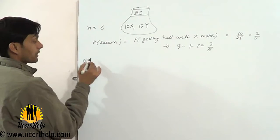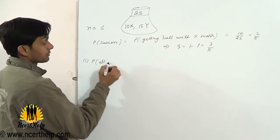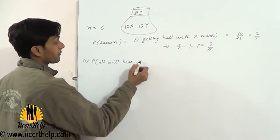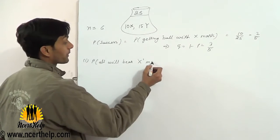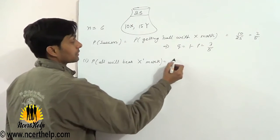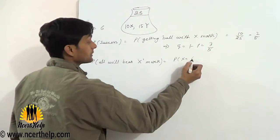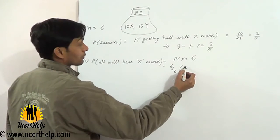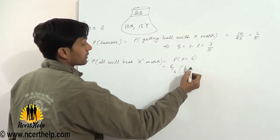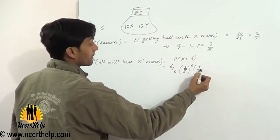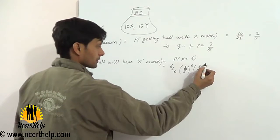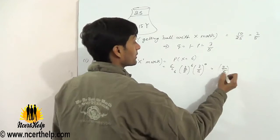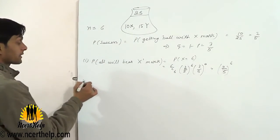So for the first part, n is how many balls are drawn: 6. For all to bear X mark, the random variable is 6. So 6C6 times (2/5) to the power 6 times (3/5) to the power 0. 6C6 is 1, so this becomes (2/5) to the power 6.